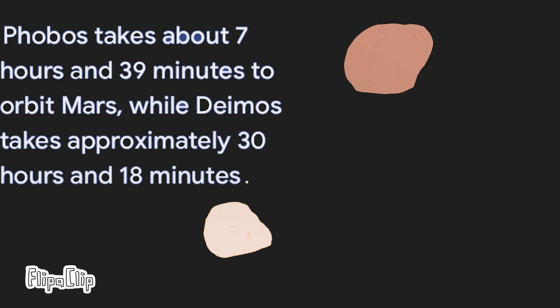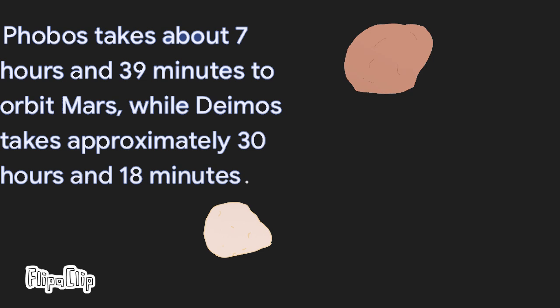It takes Phobos about seven hours to completely orbit Mars, and it takes Deimos about 30 hours. Depending on how you look at it, Mars can have the second least amount of moons, the third least amount of moons, or the fourth least amount of moons.